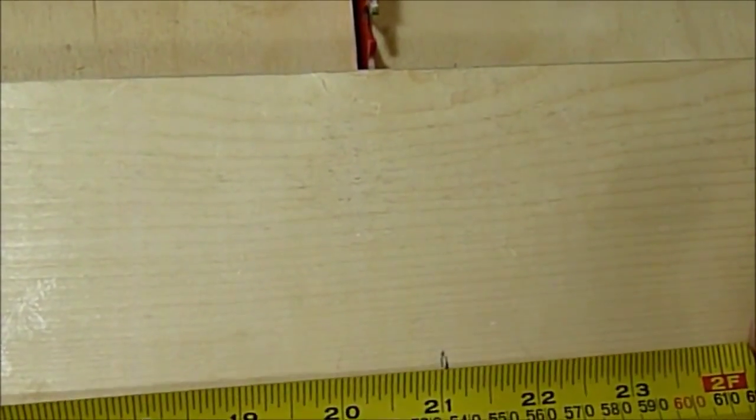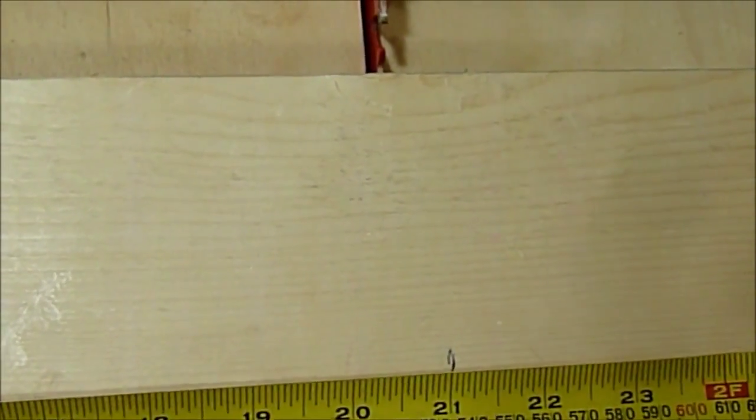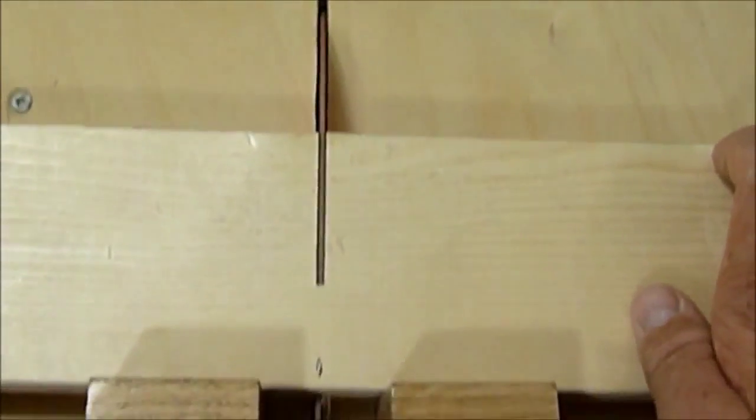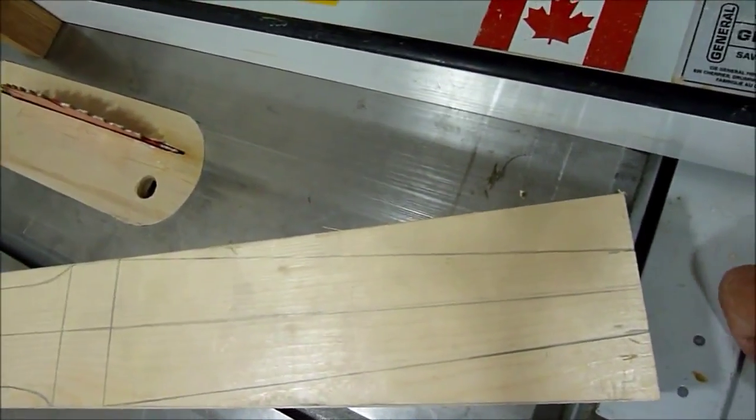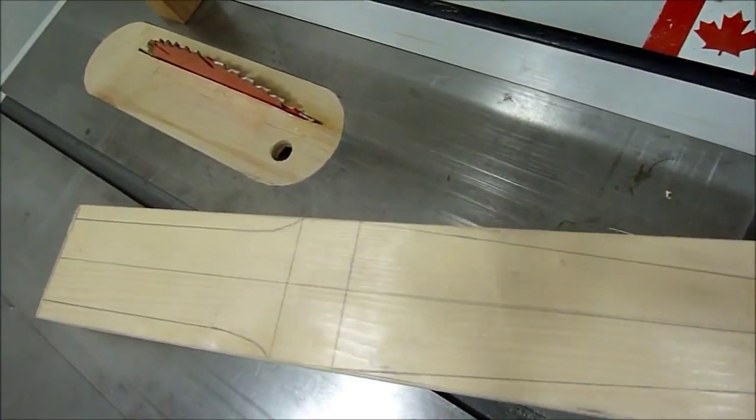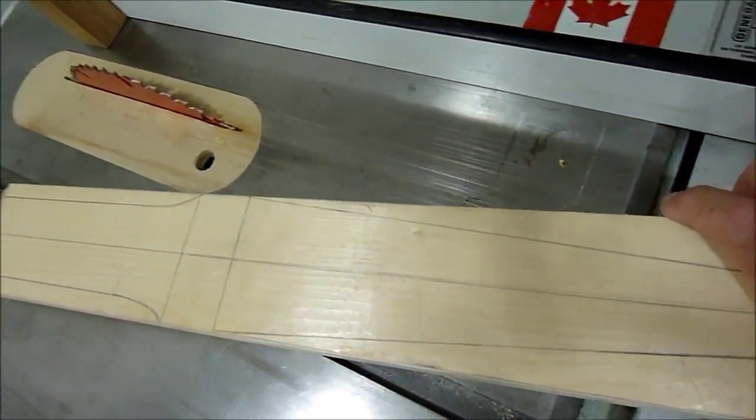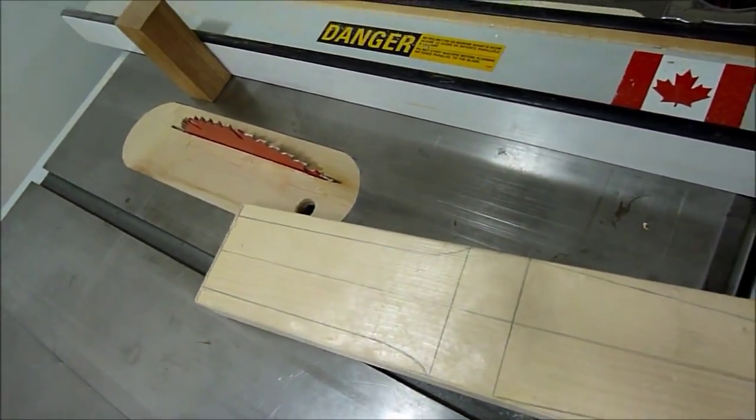So the frame of the car will be roughly 21 inches. Here I've marked a frame or body for the car and I'll carefully cut it out on the table saw.